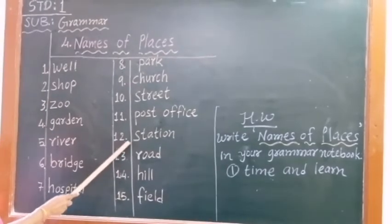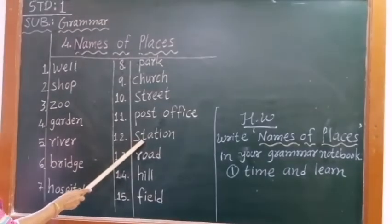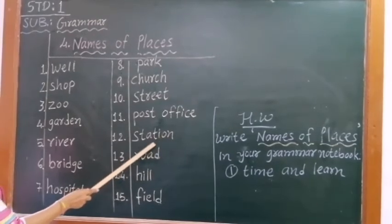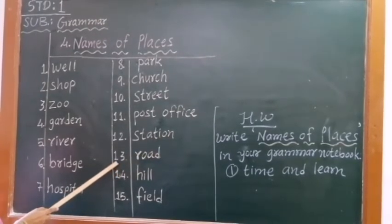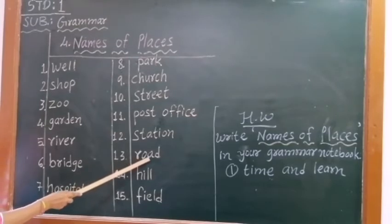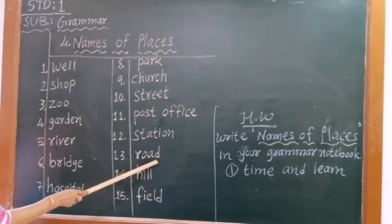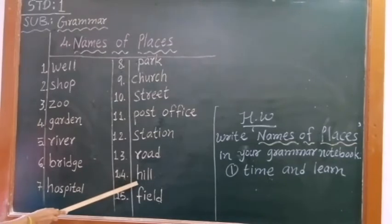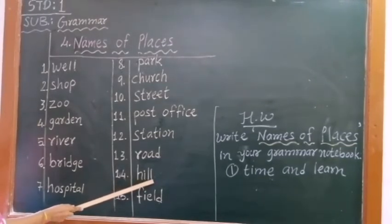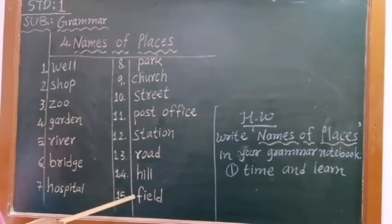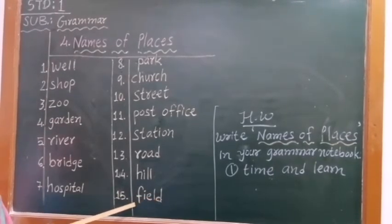Number 12, S-T-A-T-I-O-N, station. Number 13, R-O-A-D, road. Number 14, H-I-L-L, hill. And number 15, F-I-E-L-D, field.